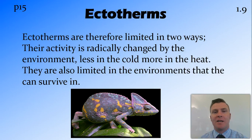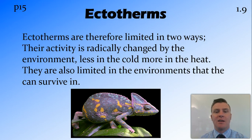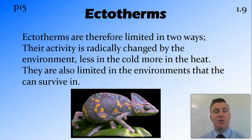This limits ectotherms in a couple of ways. Firstly, it means they're not as active in cooler weather, because the enzymes inside them aren't working as efficiently as they would in warmer conditions. So you see ectotherms like reptiles — in cold environments they are very, very slow and don't move around much, while in hot environments they are much more active. It also limits the environments ectotherms are able to survive in; they're generally found in hotter environments. For example, you're not going to find reptiles or snakes down in the Arctic — it's too cold, and their enzymes don't work well enough.